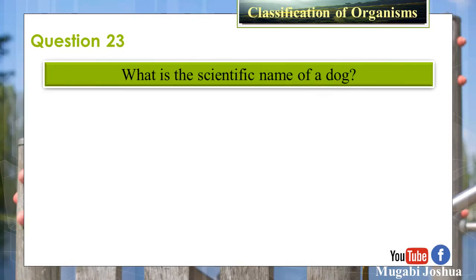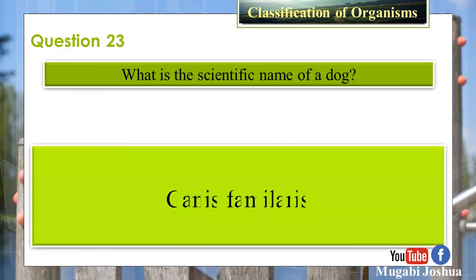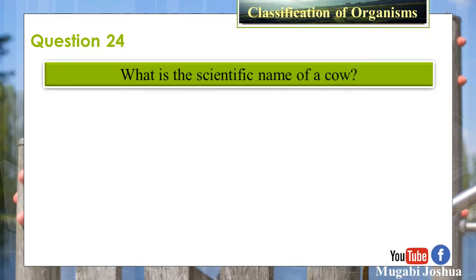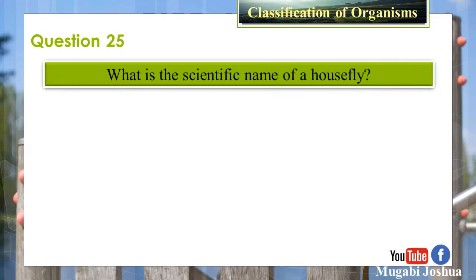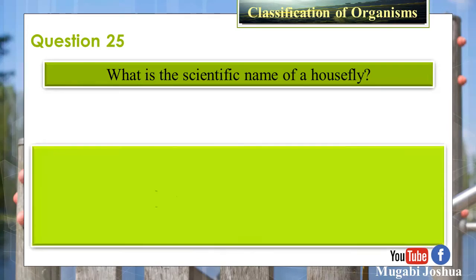Question 23: What is the scientific name of a dog? Answer: Canis familiaris. Question 24: What is the scientific name of a cow? Answer: Bos indicus. Question 25: What is the scientific name of a housefly? Answer: Musca domestica.